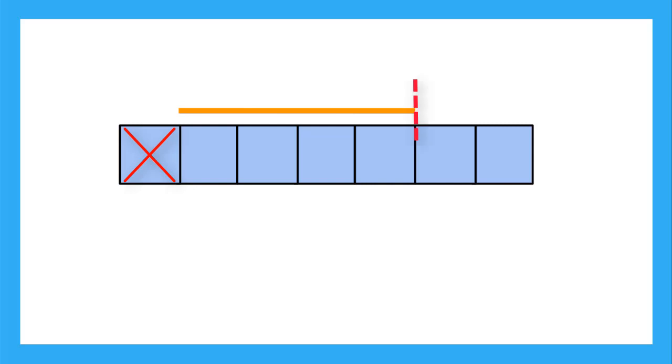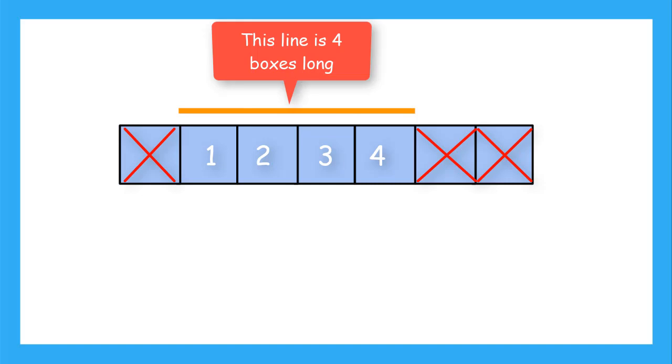Now what about at the end? The line ends where a box ends, so we can cross these last 2 boxes out too. And now we can count the boxes underneath the line: 1, 2, 3, 4. This line is 4 boxes long.